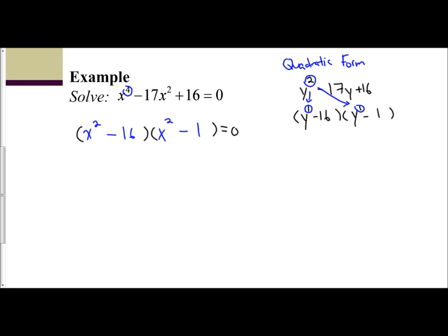To finish factoring here, we can go ahead and do our difference of squares here. X squared and 16 are perfect squares. So it's x plus 4, x minus 4.